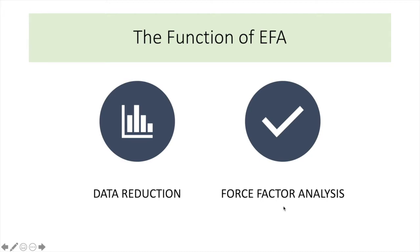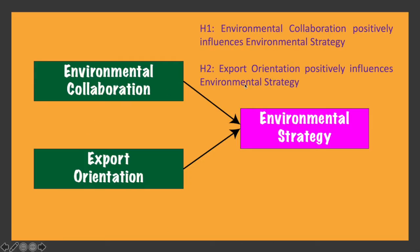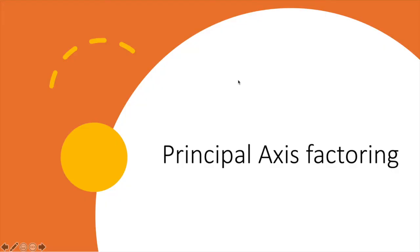Let me explain a bit more detail on force factor analysis. Based on theory, you have this model where you have two independent variables, environmental collaboration and export orientation, influencing environmental strategy, and you have developed your hypothesis and you want to test your hypothesis. If you're doing this based on your theory, you have your model and you want to test your hypothesis, then you will be working with principal axis factoring. When you have a well-defined model based on your theory and the items that you have used to structure your questionnaire you have adapted from past studies, then you will be using principal axis factoring.